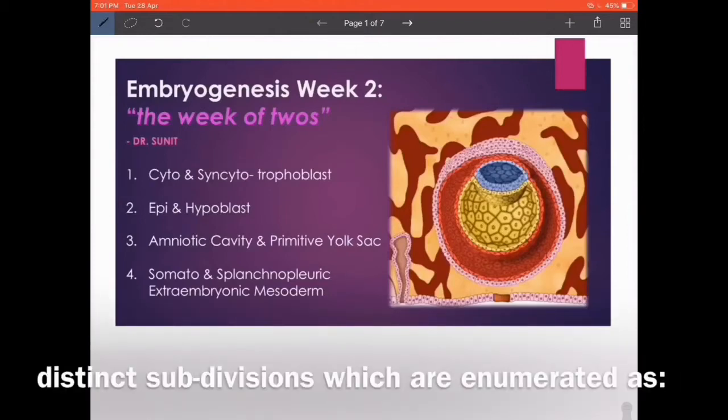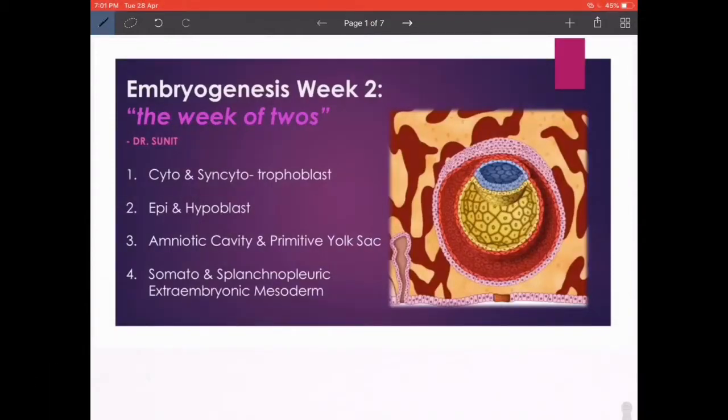Distinct subdivisions which are enumerated: First, we got Cytotrophoblast and Syncytotrophoblast. Point number two, we got the Epiblast and the Hypoblast. Point number three, we got the Amniotic Cavity and Primitive Yolk Sac. And then we got the Extraembryonic Mesoderm that's divided into Somatopleuric and Splanchnopleuric parts.